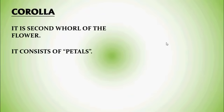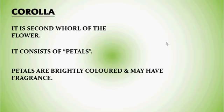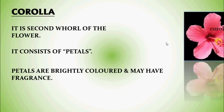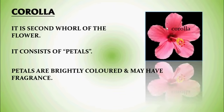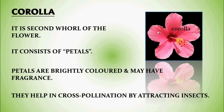Corolla — it is the second whorl of the flower. It consists of petals. Petals are brightly colored and may have fragrance or smell. The bright colored portion of the flower seen in this photograph is called petals. These petals help in cross-pollination by attracting insects due to their bright color and production of fragrance.